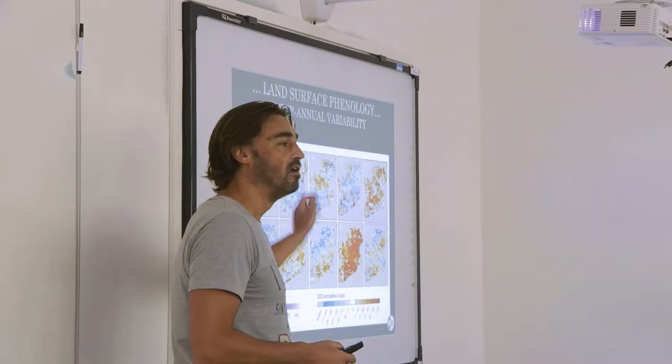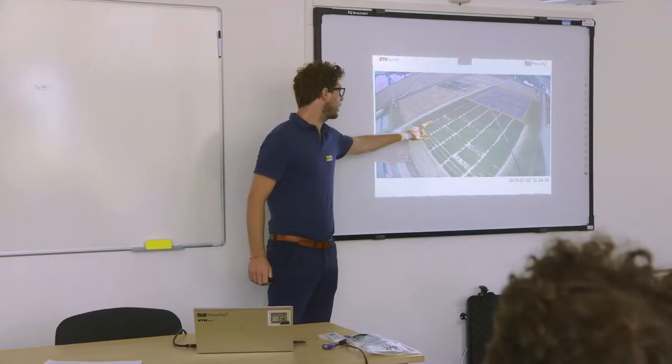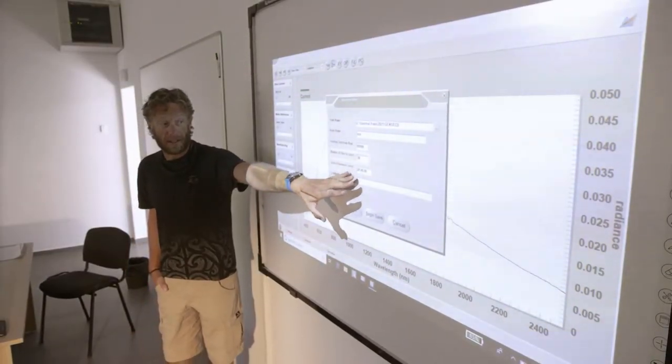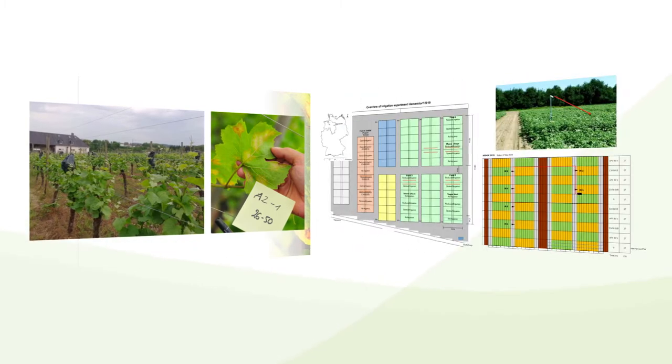The Senseco Cost Action is essentially a platform for cooperation among environmental scientists, specifically in an area called Earth Observation. In Senseco, we try to understand the effects of climate change on vegetation by measuring plant properties and ecosystem processes.